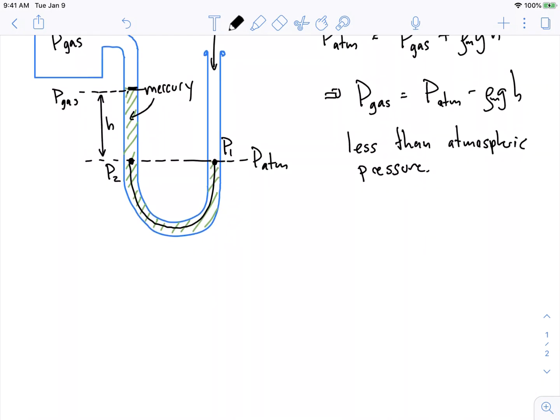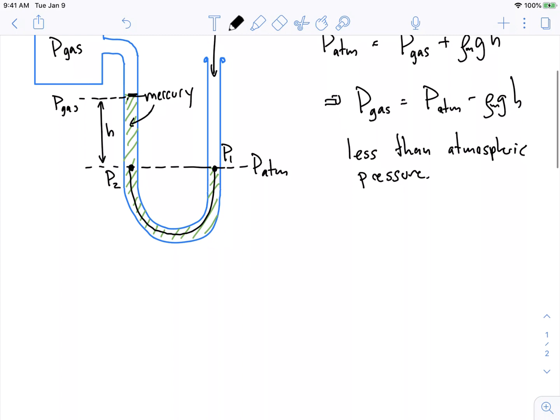We can actually calculate it out. We know some of these numbers here. We know that P gas is equal to 101,000 pascals. I might as well draw this as a capital letter, because I know Pascals is capitalized.